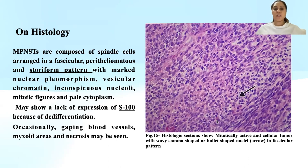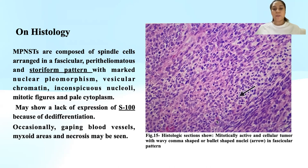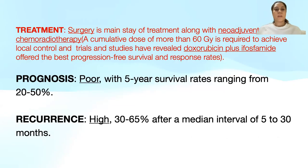On histology, MPNSTs are composed of spindle cells arranged in fascicular, perithelial, and storiform patterns. They have marked nuclear pleomorphism, vesicular chromatin, conspicuous nucleoli, mitotic figures, and pale scanty cytoplasm. They may show lack of S100 expression due to dedifferentiation, and occasionally gaping blood vessels, myxoid areas, and necrosis may also be seen.